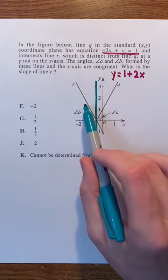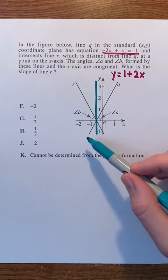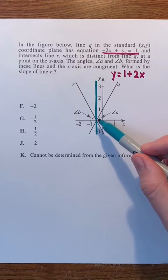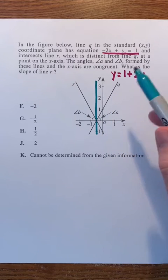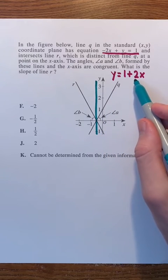Because line r is decreasing to the right, it'll have a negative slope. And because line q is increasing to the right, it'll have a positive slope, which makes sense since it has a positive slope of 2.